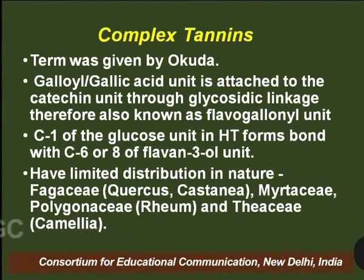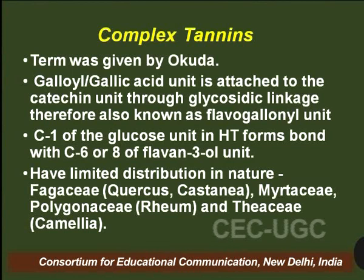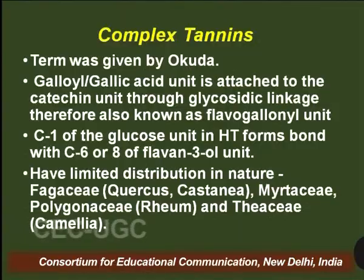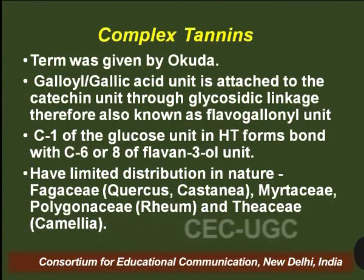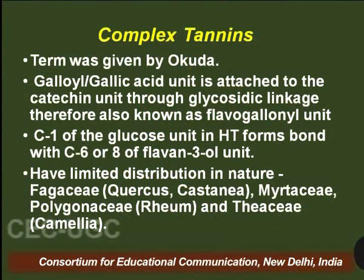The first carbon of the glucose unit is linked to the sixth or eighth carbon of the flavan-3-ol unit, forming the glycosidic linkage between the hydrolyzable tannin and the condensed tannin. Though these complex tannins are found in nature, they have very limited distribution and are largely found in members belonging to the families Fagaceae, Myrtaceae, or Theaceae.